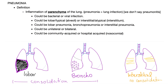What's the definition of pneumonia? Inflammation of the parenchyma of the lung. It could be bacterial or viral. It could be lobar or interstitial — lobar, bronchopneumonia, or interstitial pneumonia. It could be unilateral or bilateral. It could be community acquired or hospital acquired. All of these are the old classifications of pneumonia. We'll discuss the old first, because they still come up on your exam, and then we'll discuss the new classification.